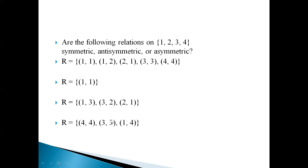In relation 4, (4,4) and (3,3) are present, and (1,4) is present but (4,1) is not present. So it is not symmetric, which means it is asymmetric. And since we have the pairs (4,4) and (3,3), it is also antisymmetric.